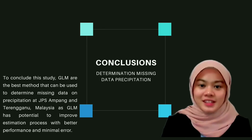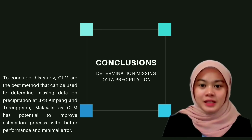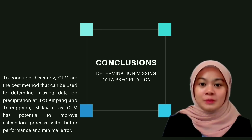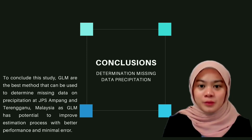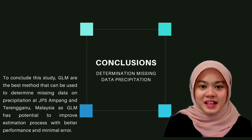To conclude this study, GLM is the best method that can be used to determine missing data on precipitation at GPS Ampang and Terangganu, Malaysia, as GLM has the potential to improve the estimation process with better performance and minimal error.